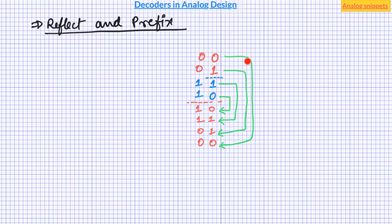So here these green arrows show the meaning of the reflection. And now prefix again the upper half with 0 and lower half with 1. So by repeating this process you can generate n-bit gray code.